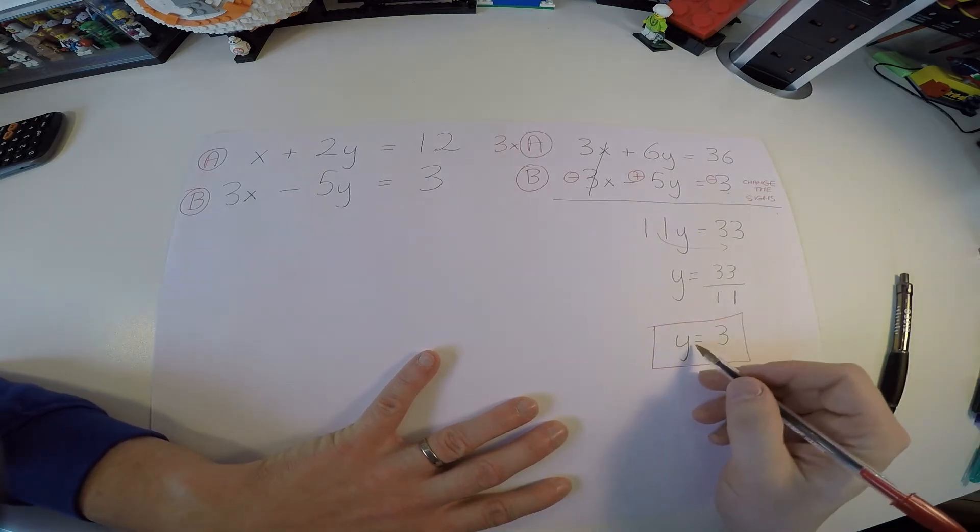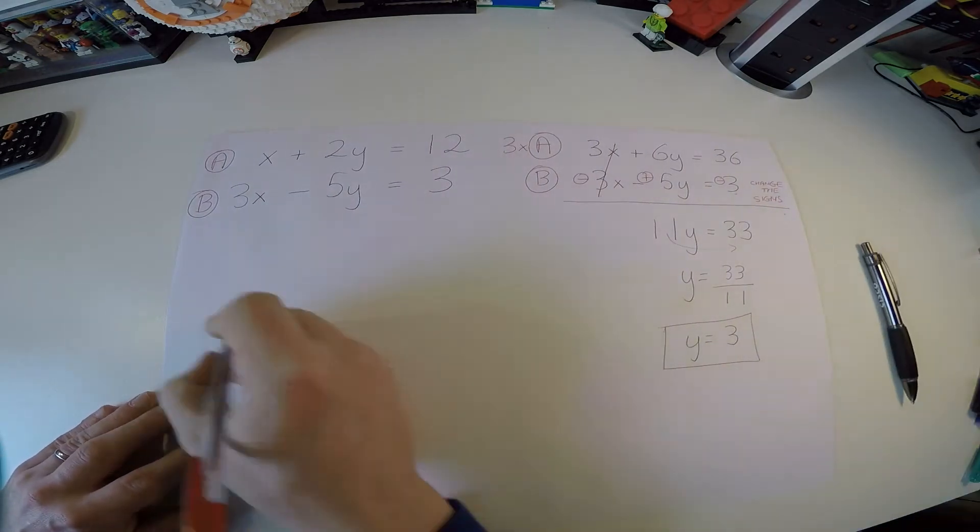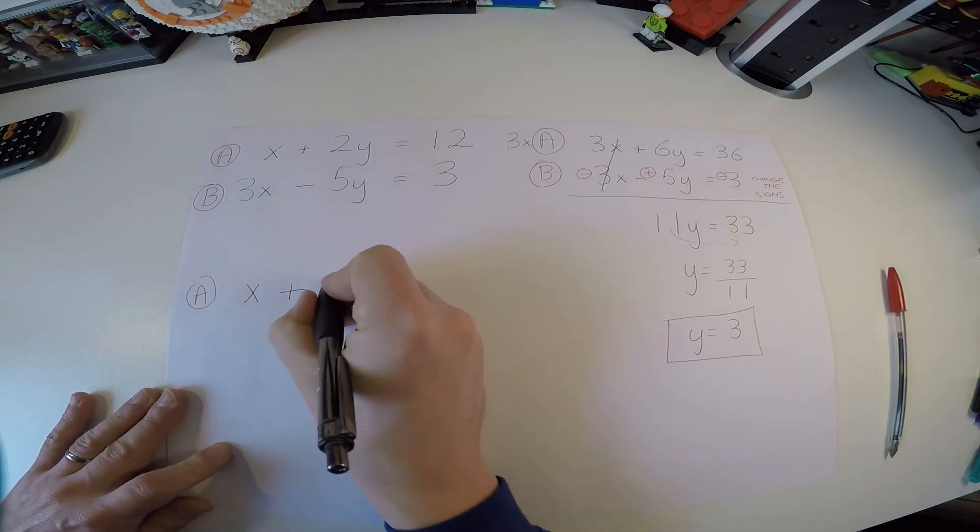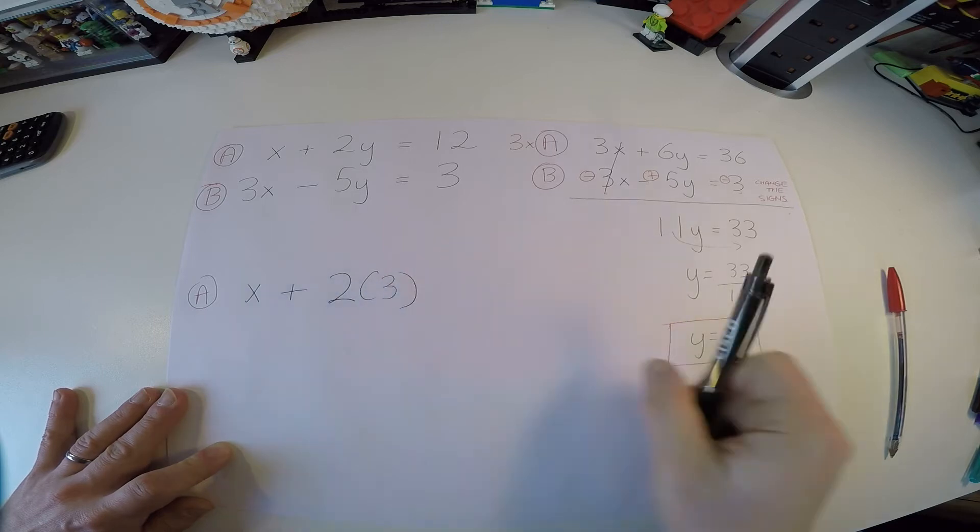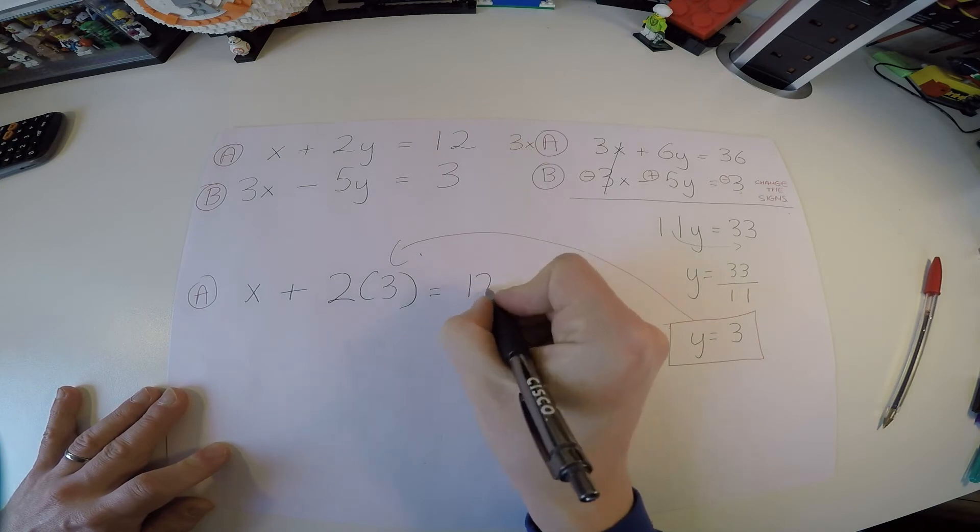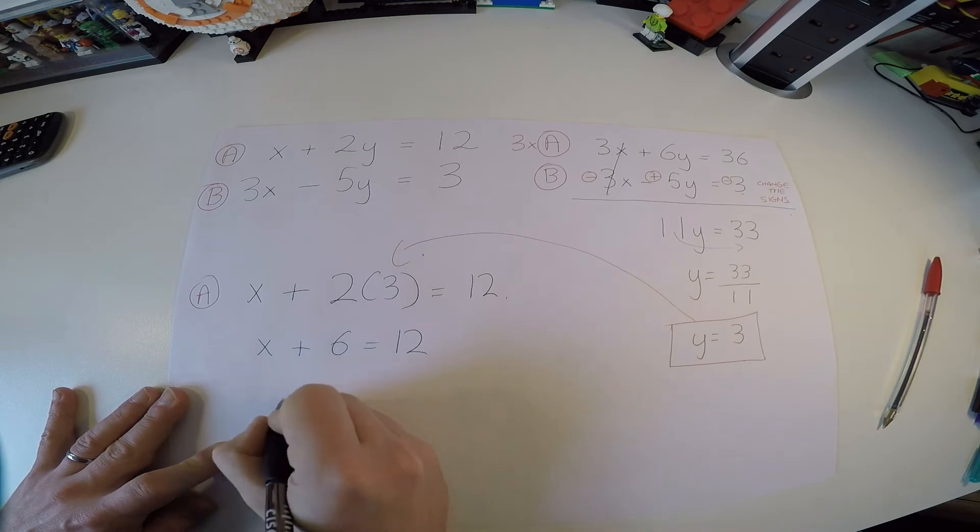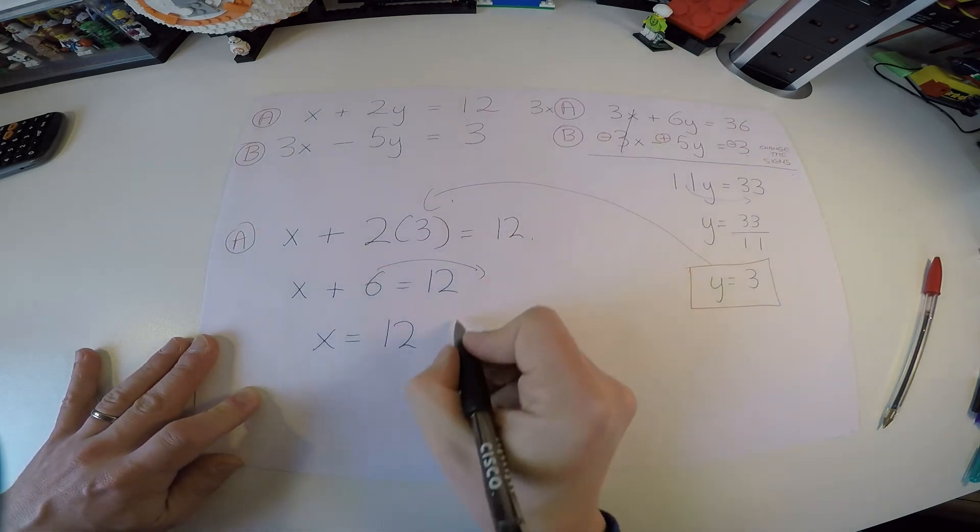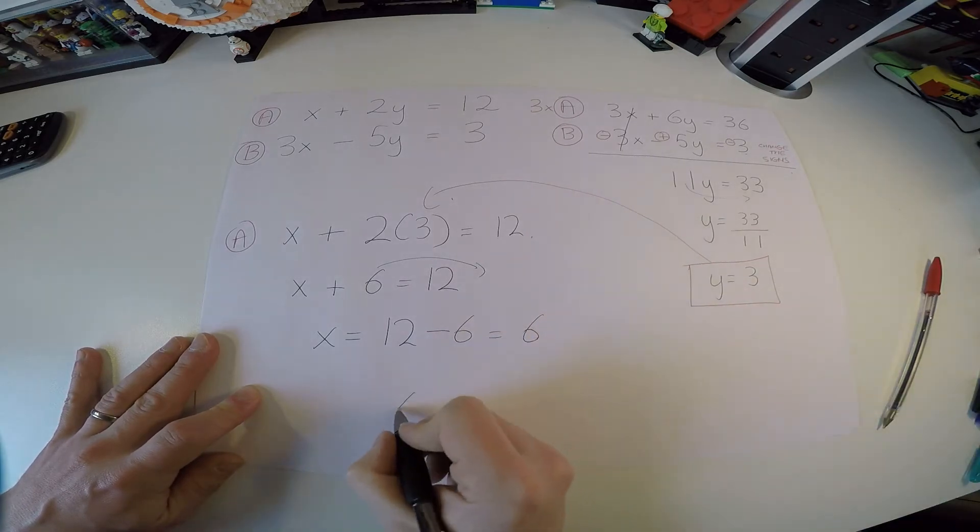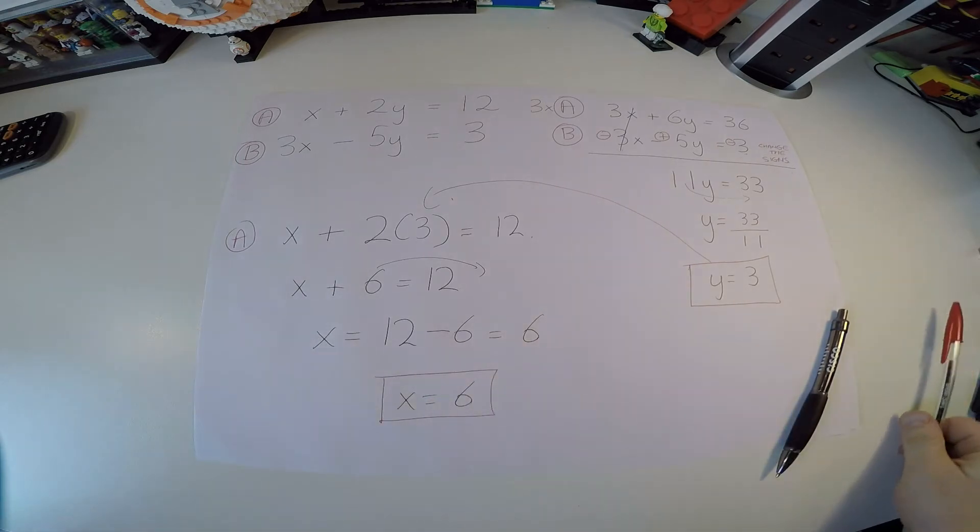So again, like the very first part, we put this back into an original equation. So let's rewrite a here. a now is going to be x plus 2 times y. But now y, of course, is 3. And that's equal to 12. So x plus 2 times 3 is 6, equals 12. x then is equal to 12. He comes over minus 6, which is equal to 6. So x is equal to 6. That's the second type done.